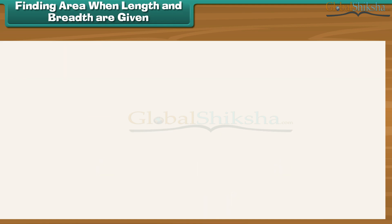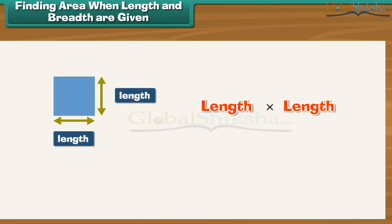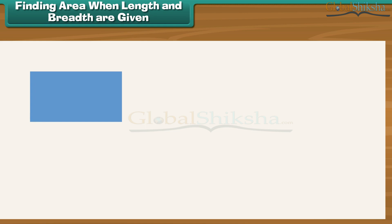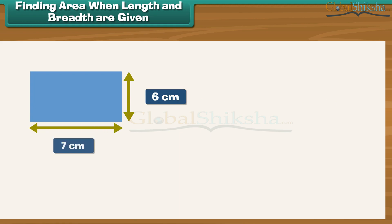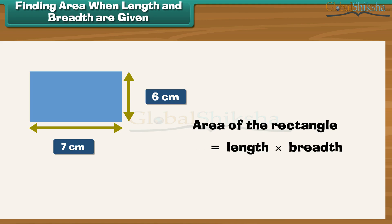Finding area when length and breadth are given: the area of a square is length into length. A square is a special rectangle whose length and breadth are equal. Now consider a rectangle which is not a square — the length of the rectangle is six centimeters and breadth is seven centimeters. The area of the rectangle is equal to length into breadth, which is six into seven, equaling forty-two centimeters square.